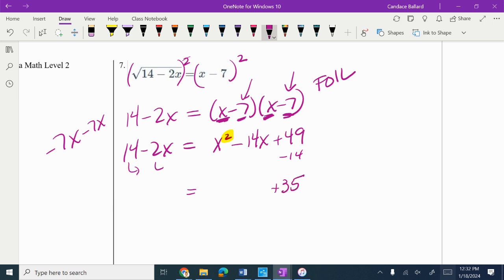And then I'm going to move the 2x over by adding. So negative 14x plus 2x is negative 12x. Then we drop the x squared down and we get 0 on the right side.